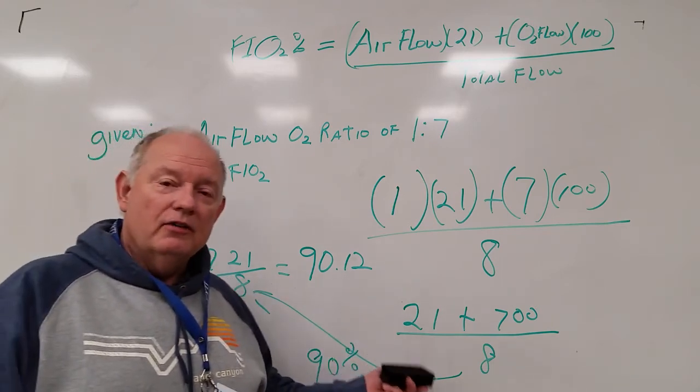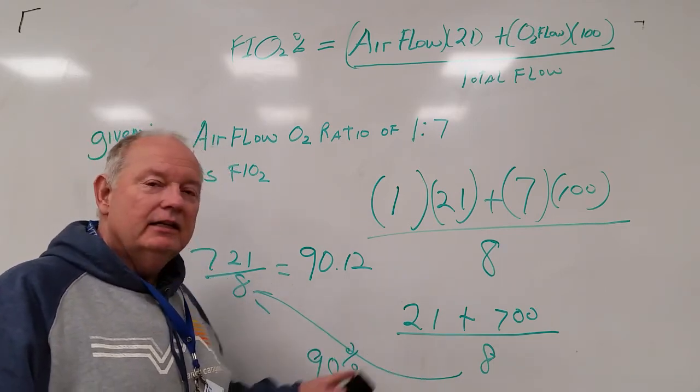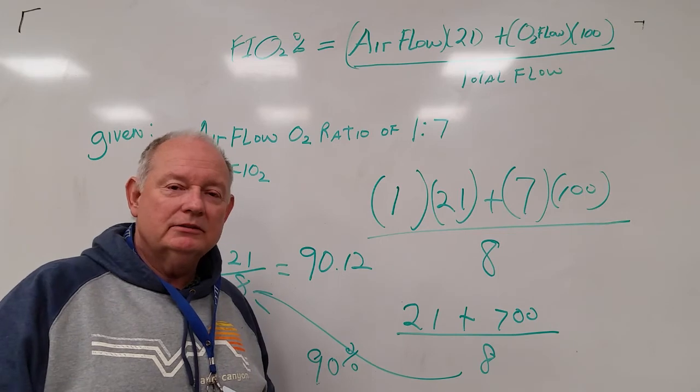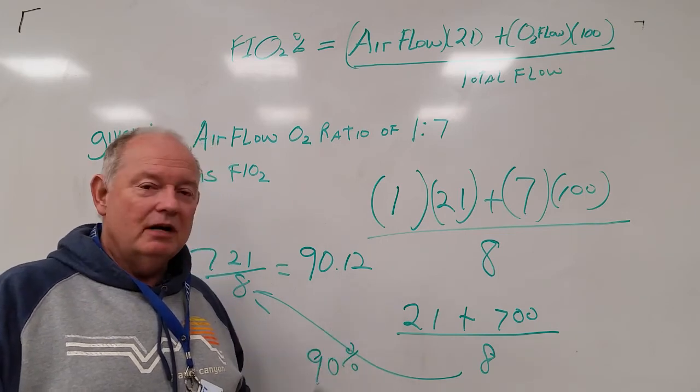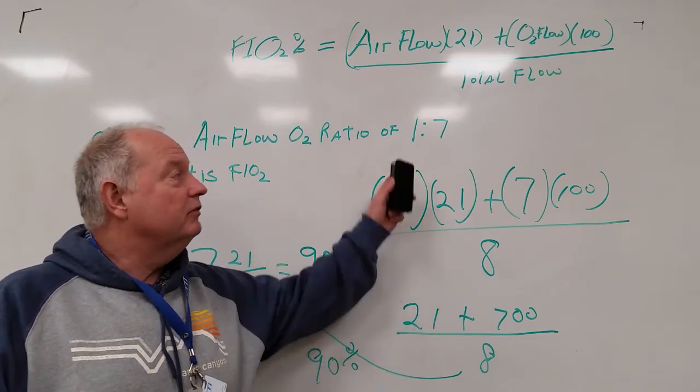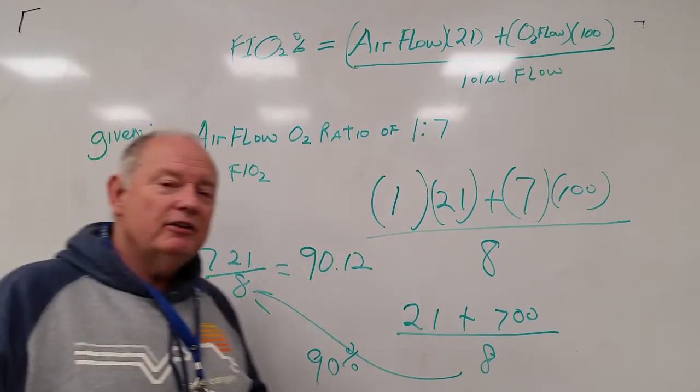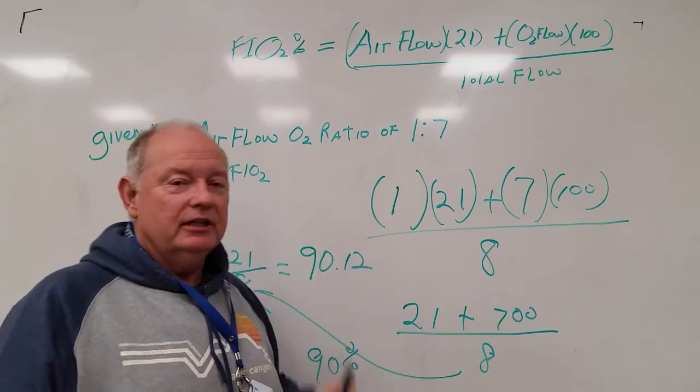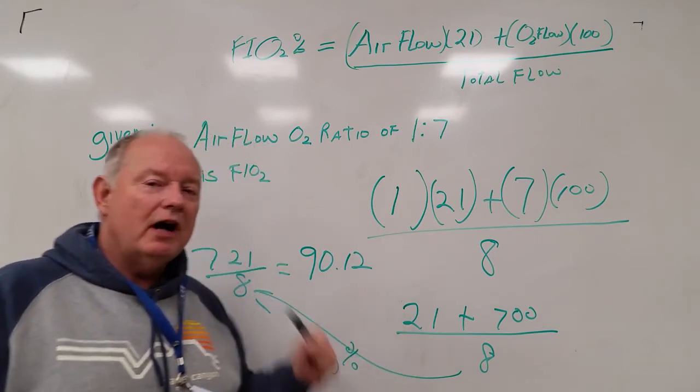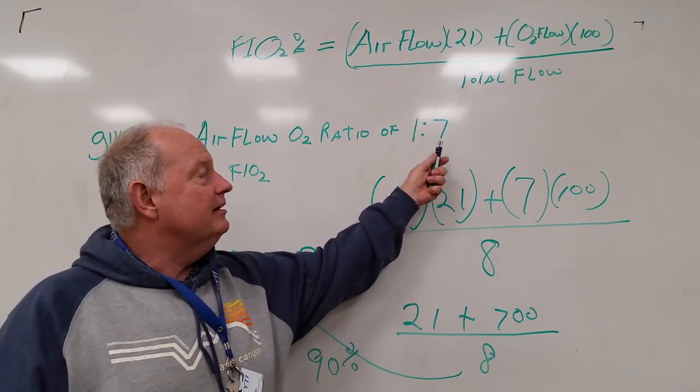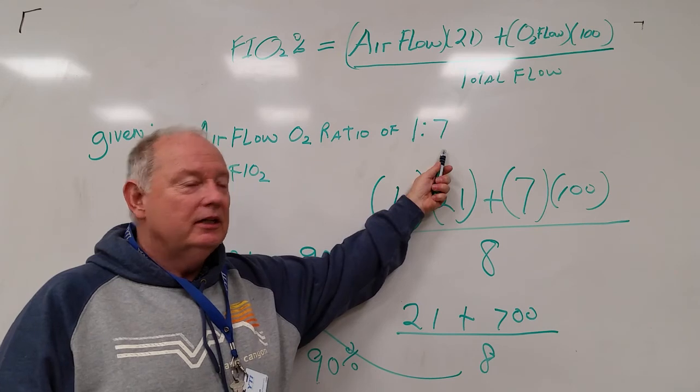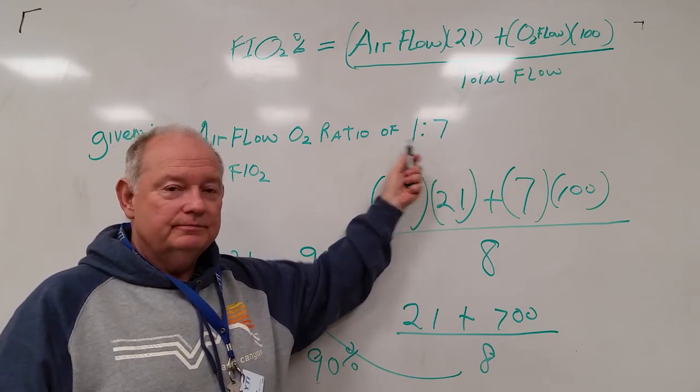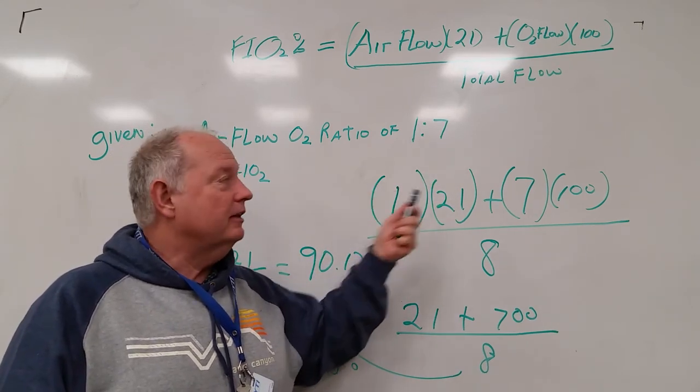Now you can go the other way and put 90 into your magic box and you will come up with the same flow ratio. Here's another trick with this. This flow ratio is air to oxygen. We usually control for oxygen, so we set the oxygen to one, not the air flow. This is a trick that they have done.